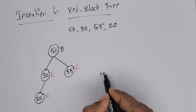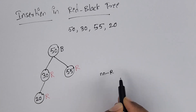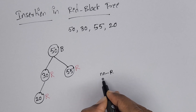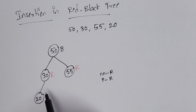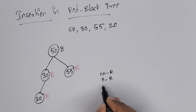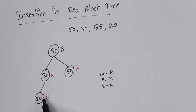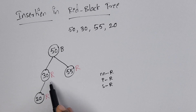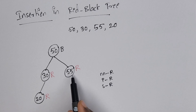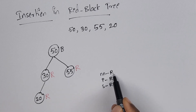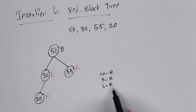When the new node is red and the parent is also red, we need to check the parent's sibling color. The new node is red, the parent is red — that is a red-red conflict. We must check the sibling color of the parent. In this case, the new node is red, the parent is red, and the sibling is also red.